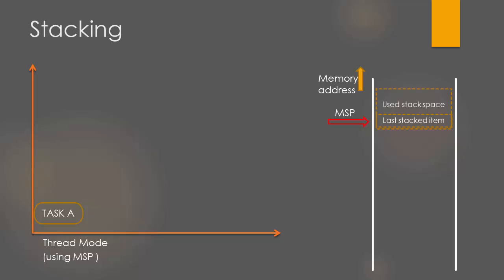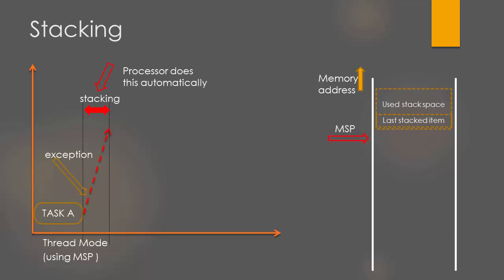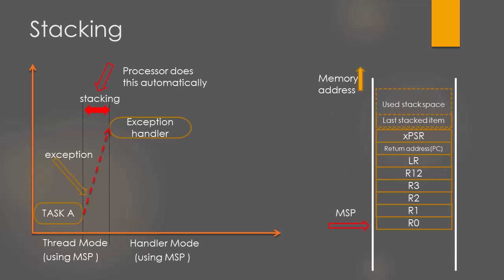When the exception occurs, the processor automatically pushes many registers onto the stack before executing the exception handler, and MSP again points to the last item onto the stack memory. You can also observe that the mode of the processor is changed to handler mode, and now the processor is executing the exception handler.